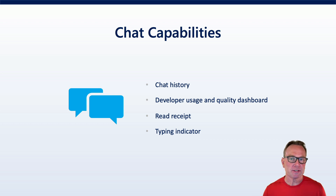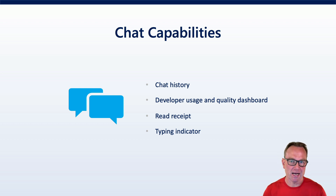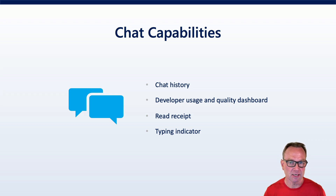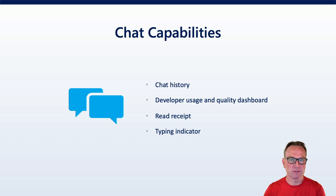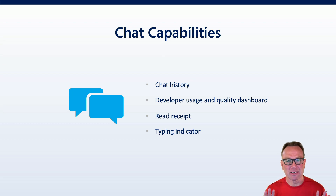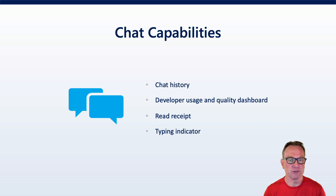Chat is another capability. You can actually host hundreds of users in a chat thread, and you'll get a chat history that includes user chats as well as system-generated events such as participants leaving and entering. You'll also have developer usage information and a dashboard about the chats going on. You can integrate with different types of notifications — you can be notified for read receipts when a user has read something, and there are typing indicators so other chat participants can see when someone is composing a message. You can even combine chat with audio video if you want.